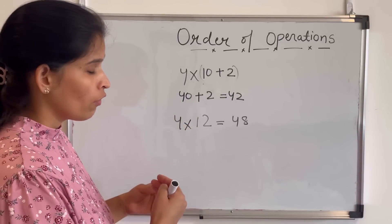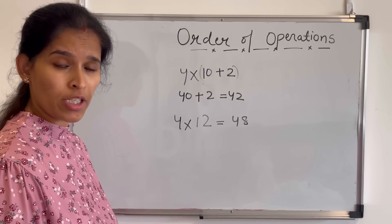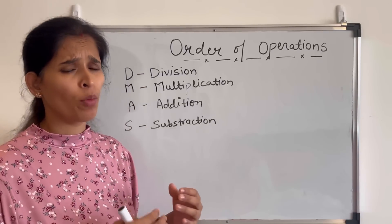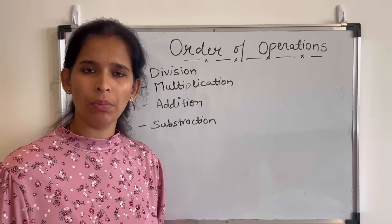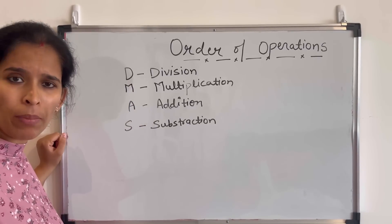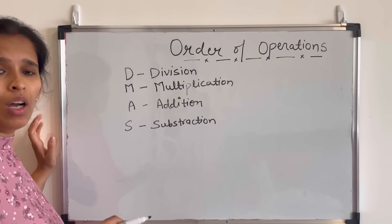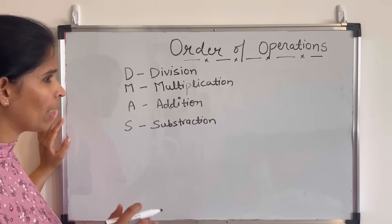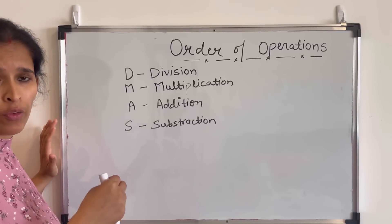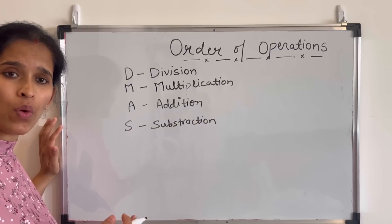So for this confusion we have some set of rules to determine which operation comes first and which comes later, so it will become easy for us to solve our problems. Whenever we have so many operations in one problem, we are going to follow this order: first we'll solve division, then multiplication, then addition, and then subtraction. In short, we should remember that we have to follow the DMAS rule.